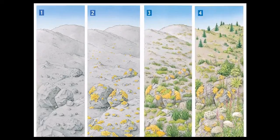This picture shows the progression of primary succession from an area of rock in frame 1, to frame 2 where lichen has begun to grow. In frame 3, there's enough soil for mosses and small plants. And then in frame 4, there's enough soil to grow wildflowers, shrubs, and trees.